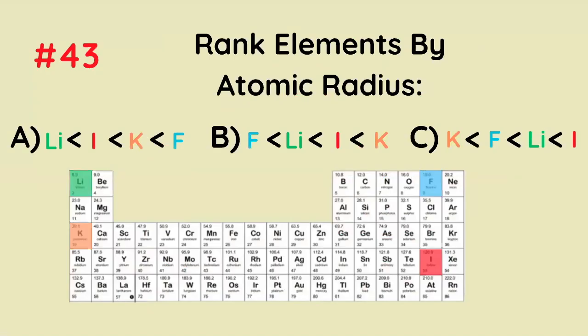Rank elements by atomic radius, all four of these. Blue is the smallest, then green, then red.